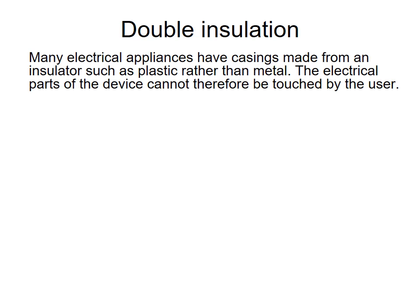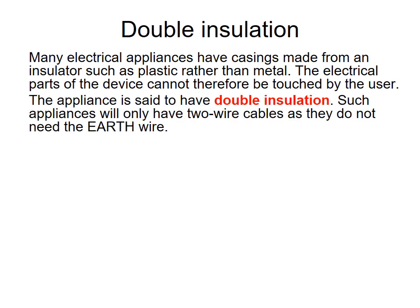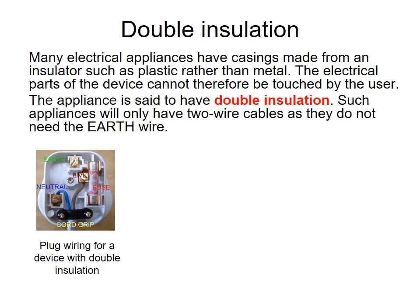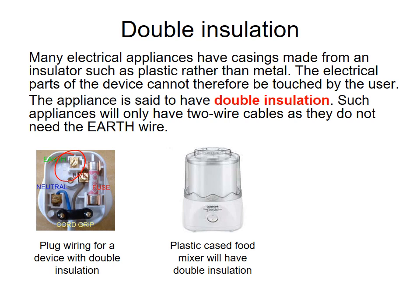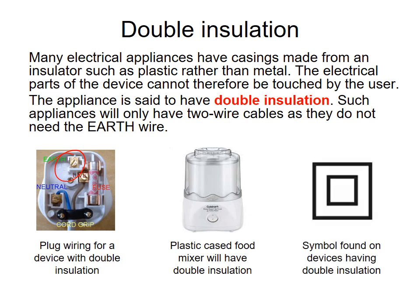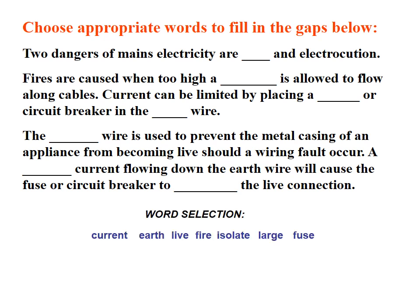Another safety feature is double insulation. Many appliances have casings made from an insulator like plastic instead of metal. The electrical parts of the device are therefore separated from the user by plastic insulation. Appliances with double insulation only have two-wire cables and don't need an earth wire. A plastic food mixer would be an example, and there is a specific symbol found on devices with double insulation.